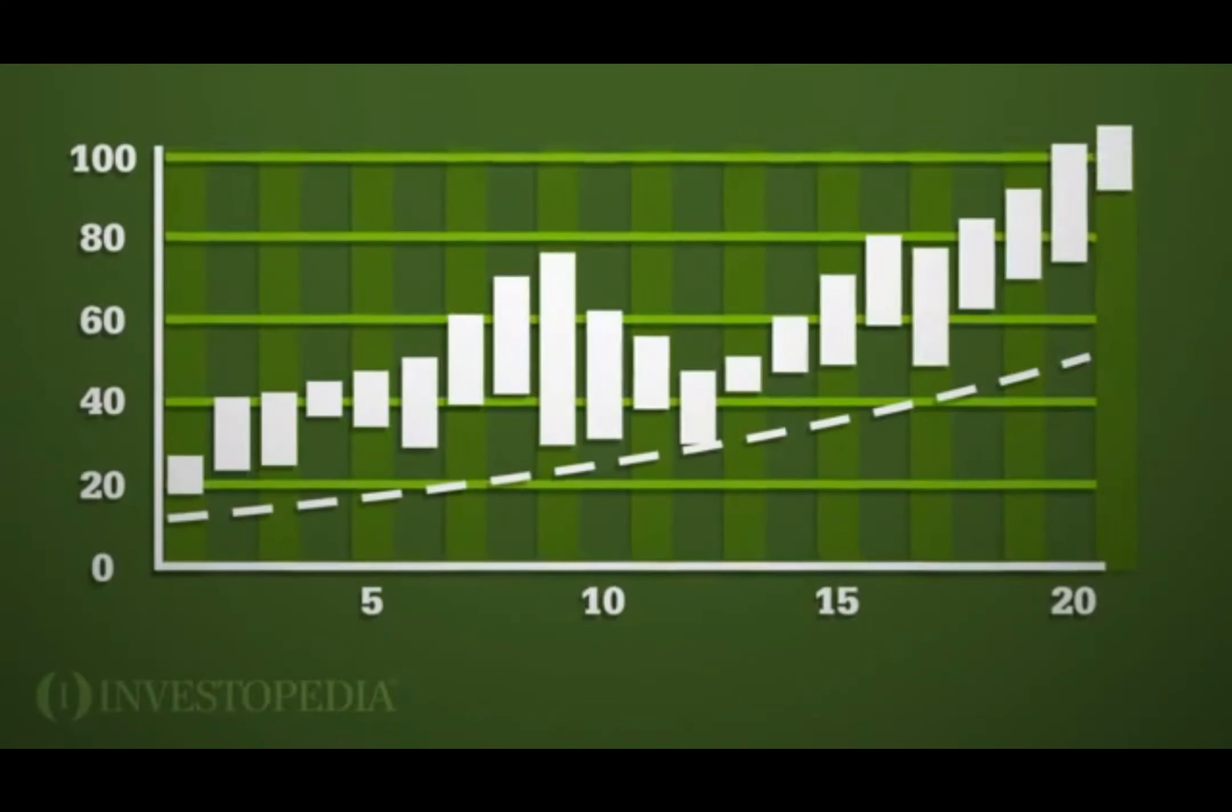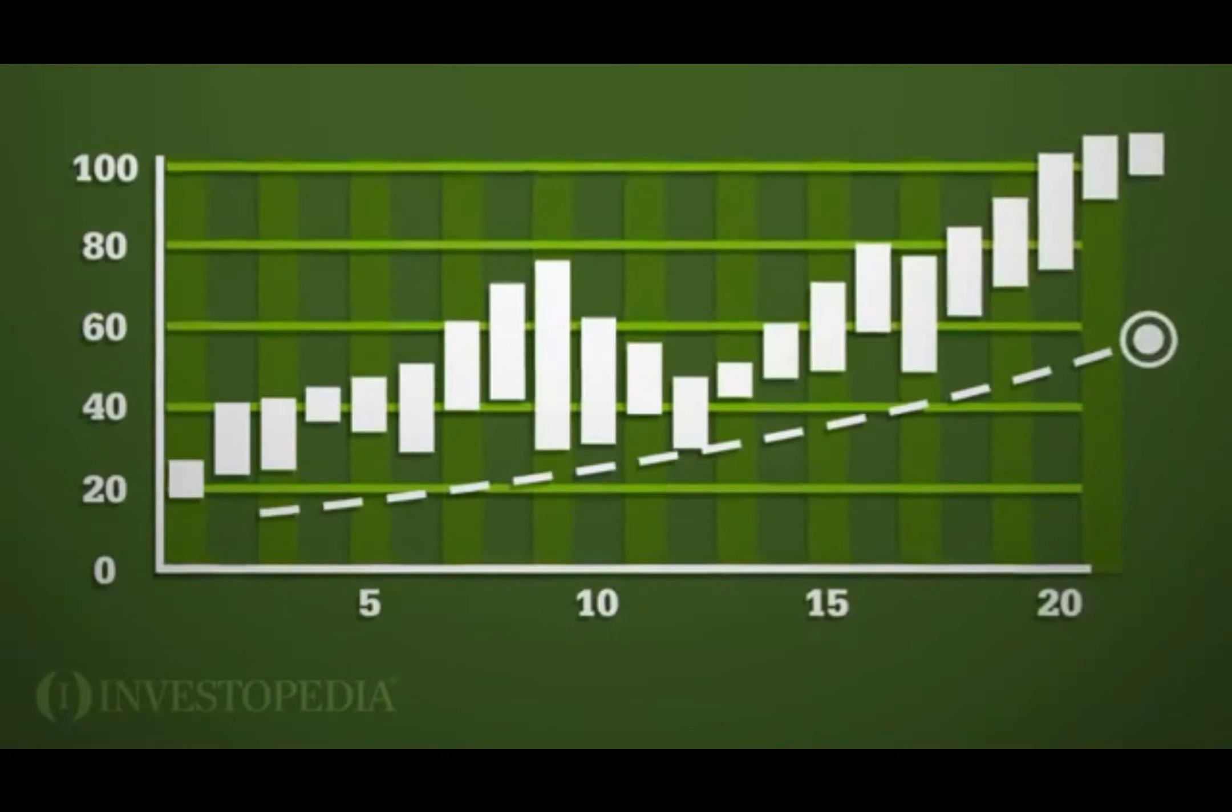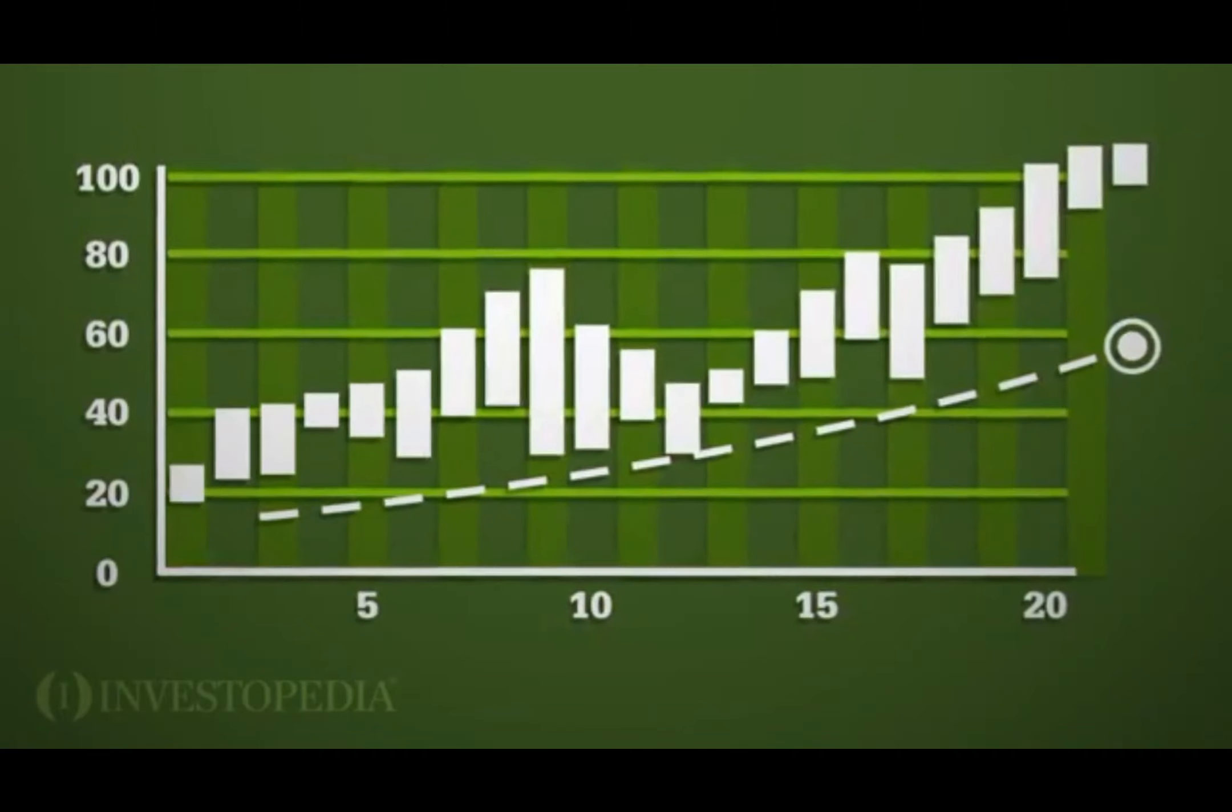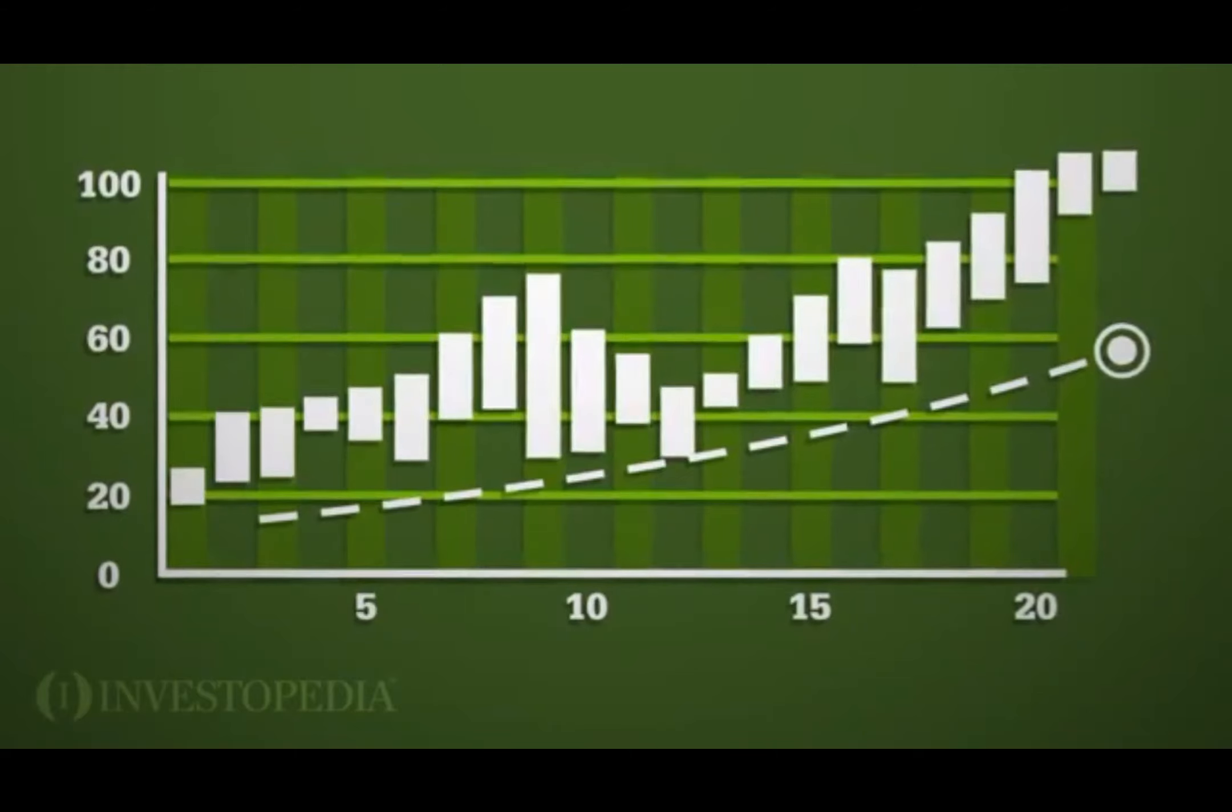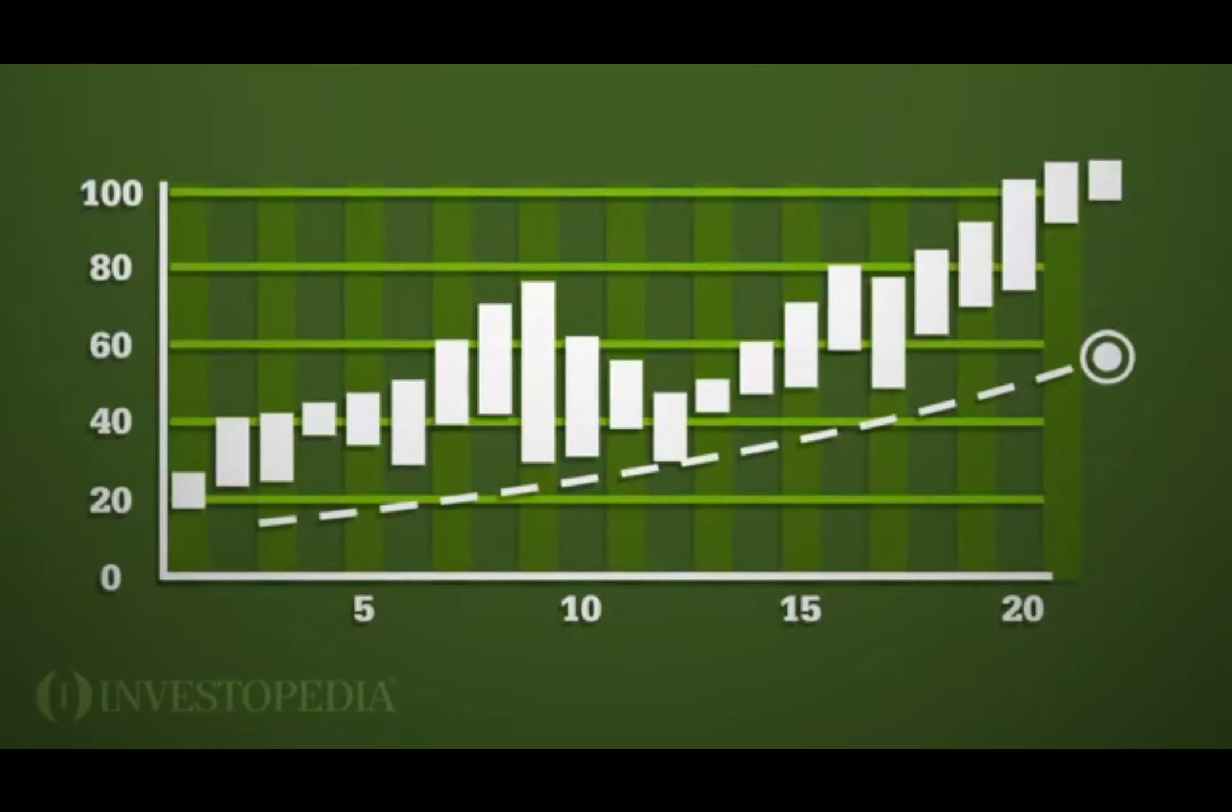As new price data is added each day, the 20-day moving average shifts forward, always using the latest 20 available data points. Each data point is weighted equally in the simple moving average, regardless of whether it happened yesterday or 20 days ago.